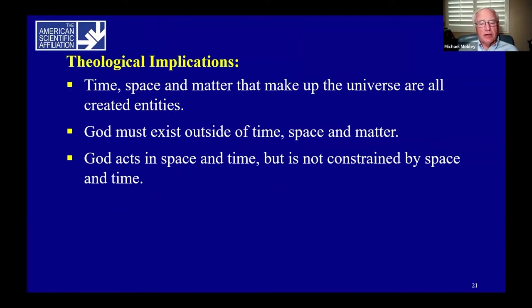What are the theological implications? Time, space, and matter that make up our universe are all interwoven, created entities. God as creator must exist outside of time, space, and matter. God acts in space and time but is not constrained by space and time. The past, present, and future are all within God's sight. You might say that they are all now to God.